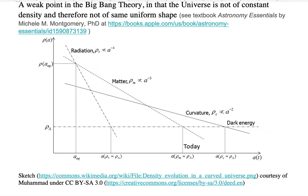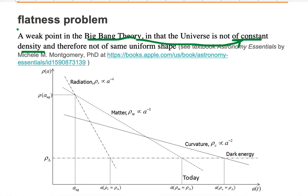The Big Bang Theory assumes that the universe is of constant density. Since the universe has a constant density, it has a constant shape. Since the shape is constant, they call it a flat shape, or like a sheet of paper.